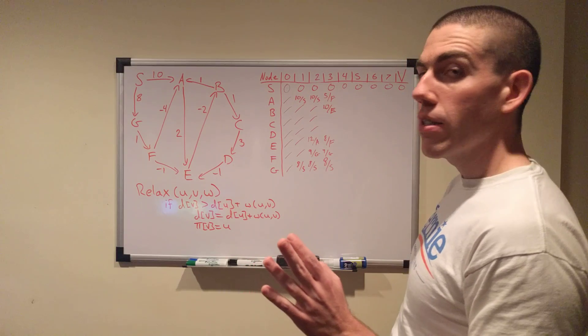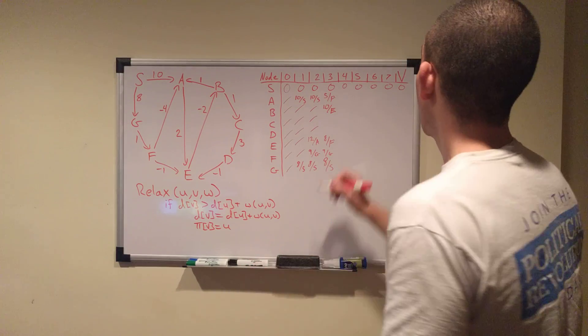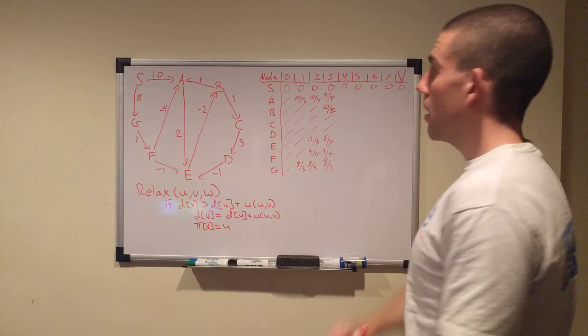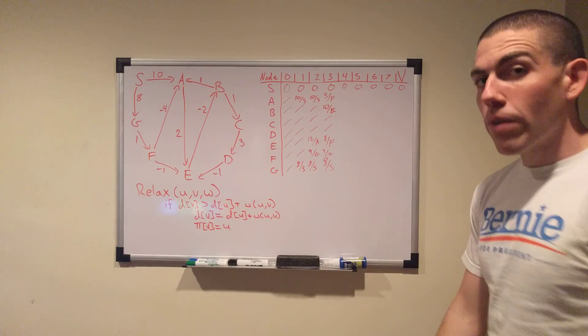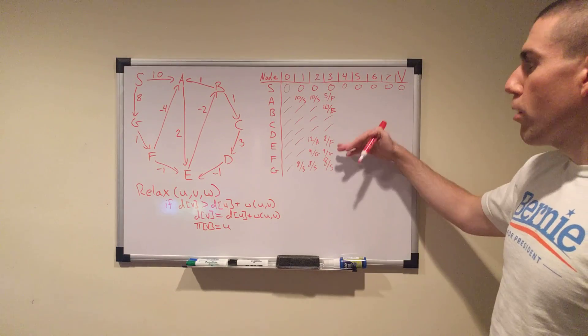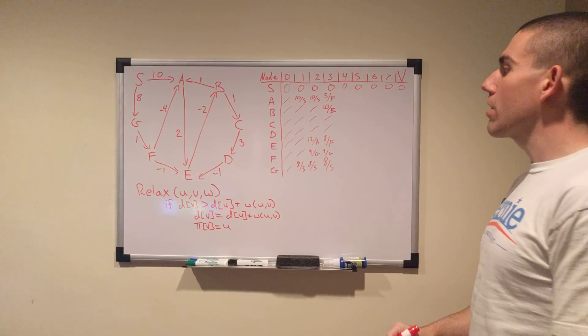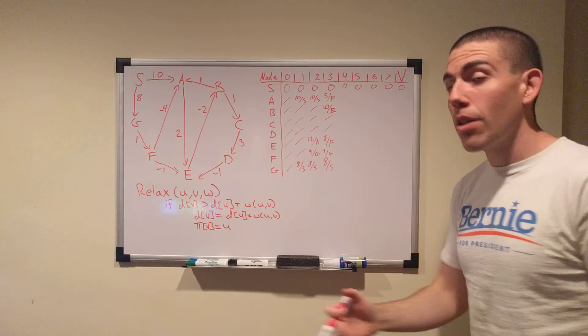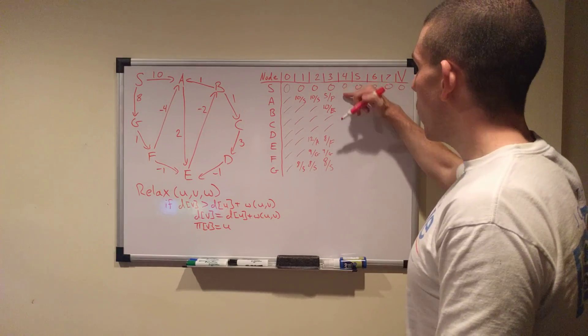And those are all of F's outgoing edges, so we're done with F. F's distance did not change. G's distance will not change. 9 from G, 8 from S. And yes, that is an 8. And these two remain null. Now, fourth iteration. Things are starting to move a little more quickly. We're filling out these null values. As we fill them out, we have more things to play with.